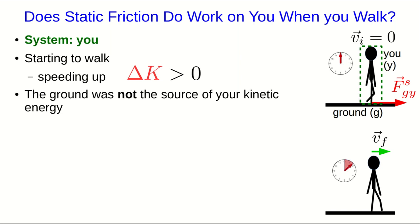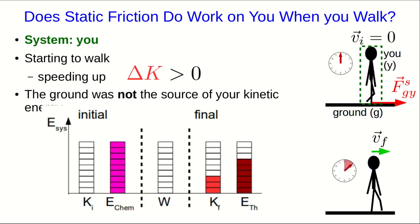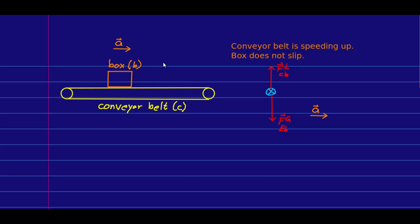So where did the energy come from? Well, if you think about it, this makes sense, because the source of the energy to get you going wasn't in the ground. That would be awfully nice if you could just sit back and relax, and the ground would get you going. The source of the energy was that you used your own chemical energy to get yourself going.